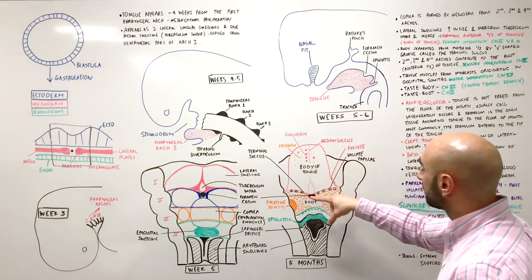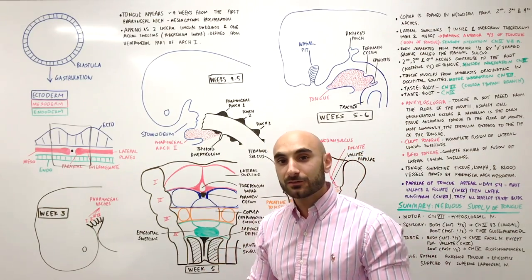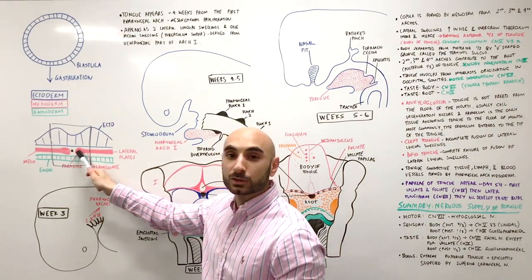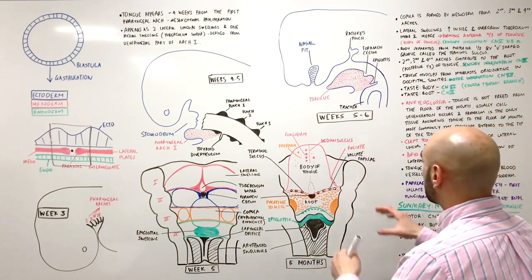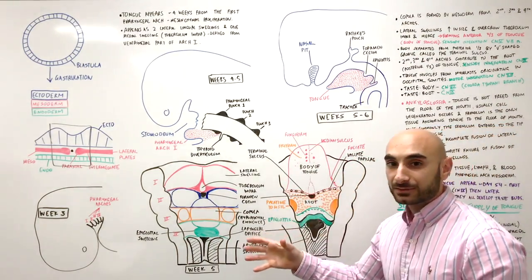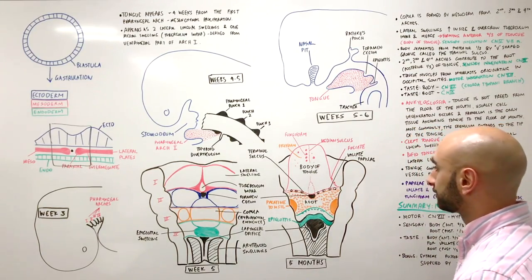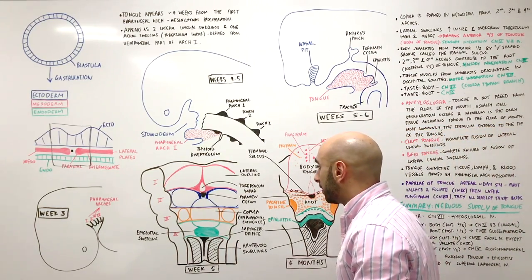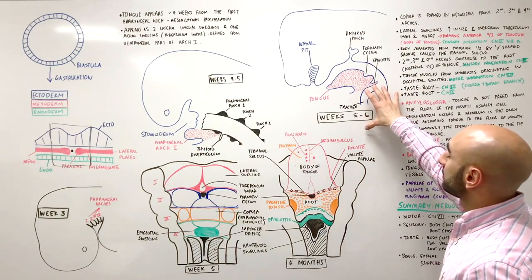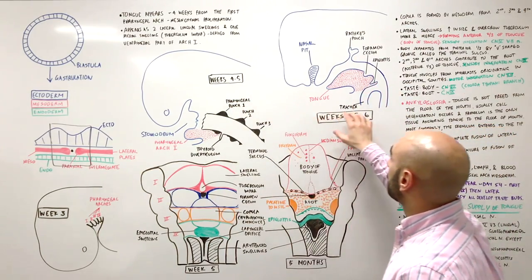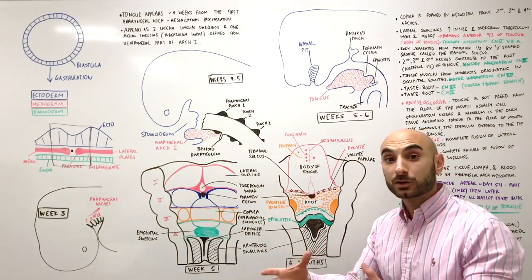The muscles of the tongue are all formed by occipital somites. As described earlier, somites are from paraxial mesoderm and they form the muscles of the tongue. The connective tissue, lymphatics, and blood vessels are all formed by pharyngeal arch mesoderm. Looking at the fifth and sixth week compared to the fourth and fifth week, you can see how the tongue grows and proliferates to become more like its final form.